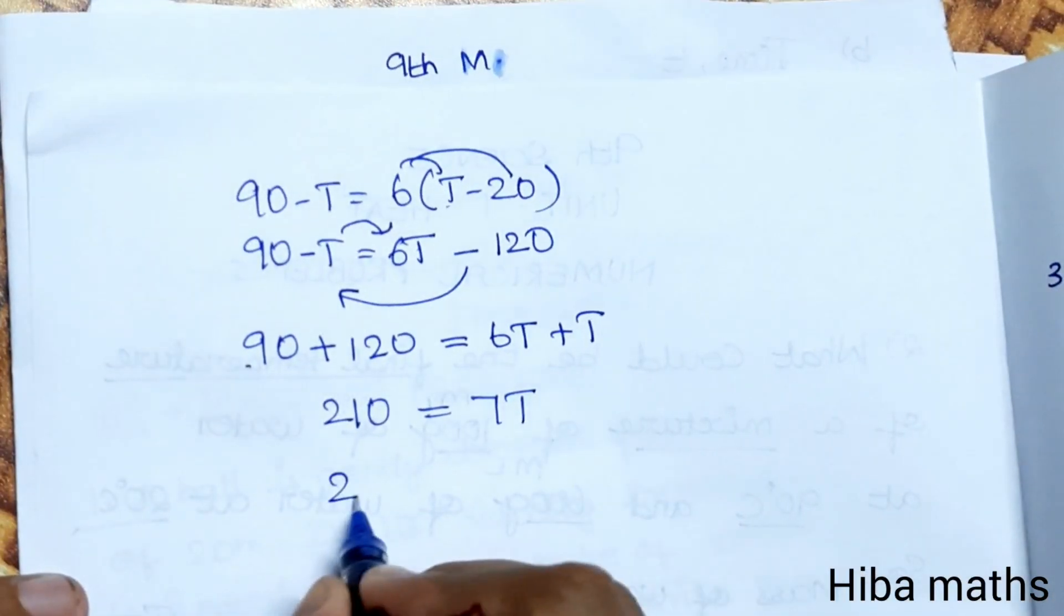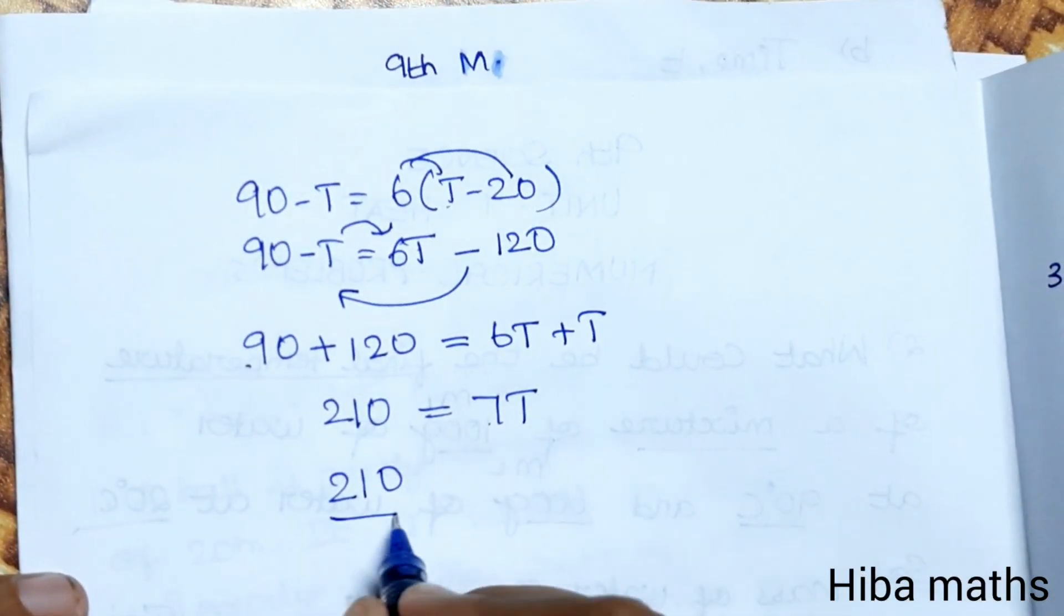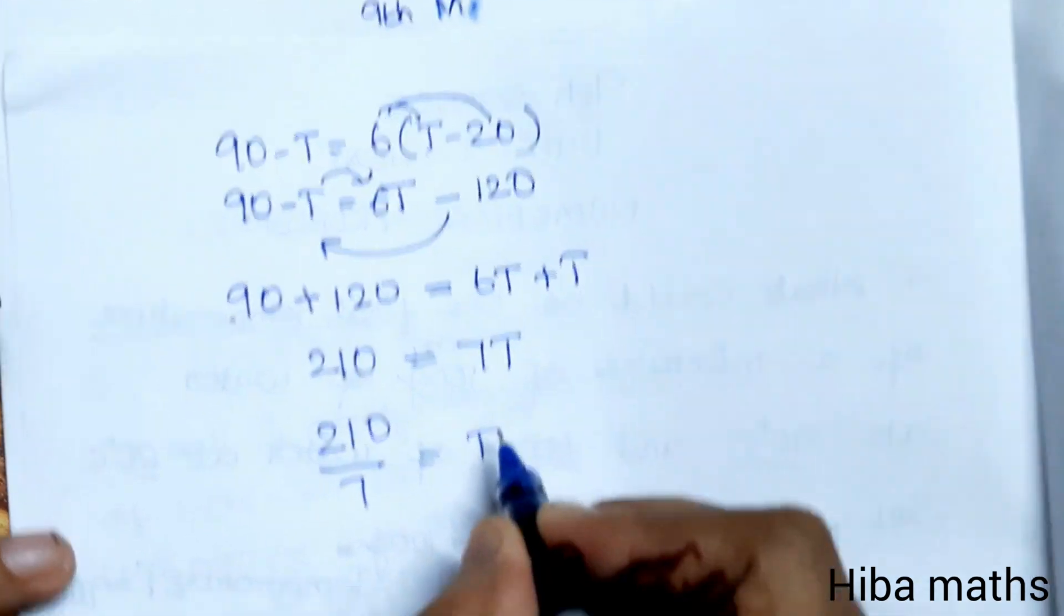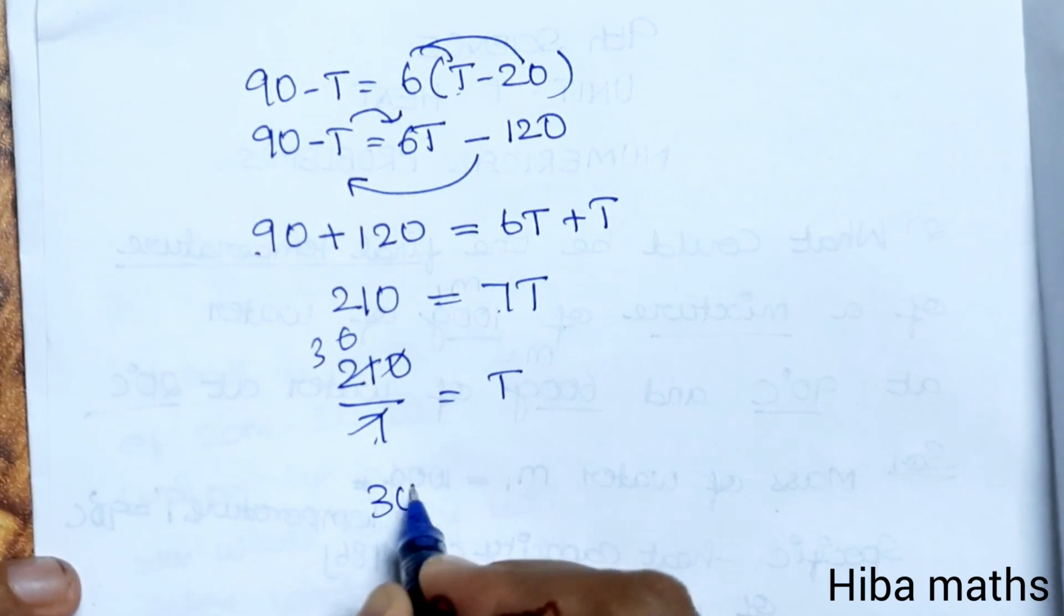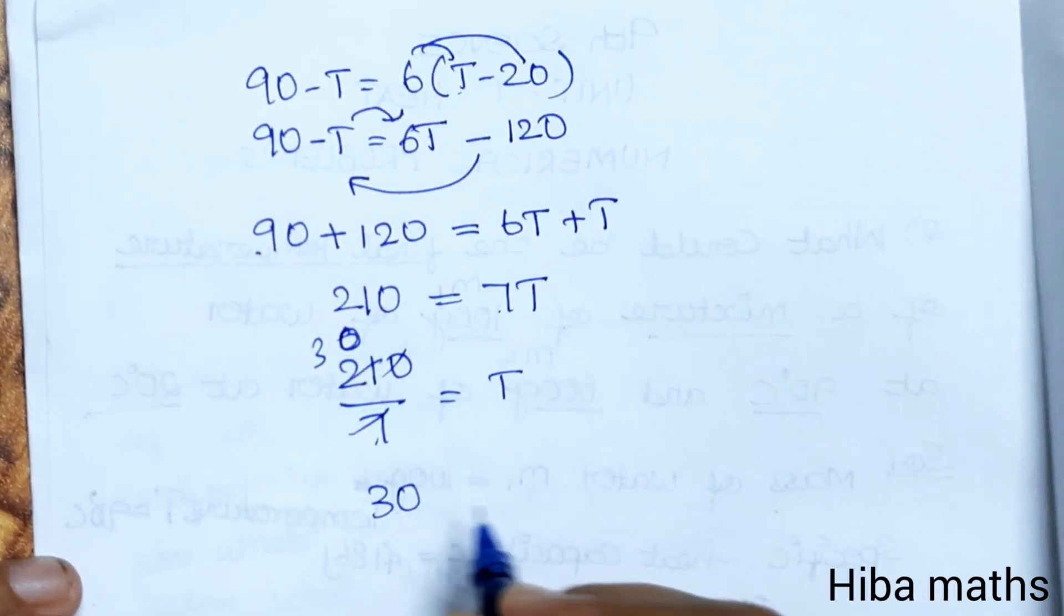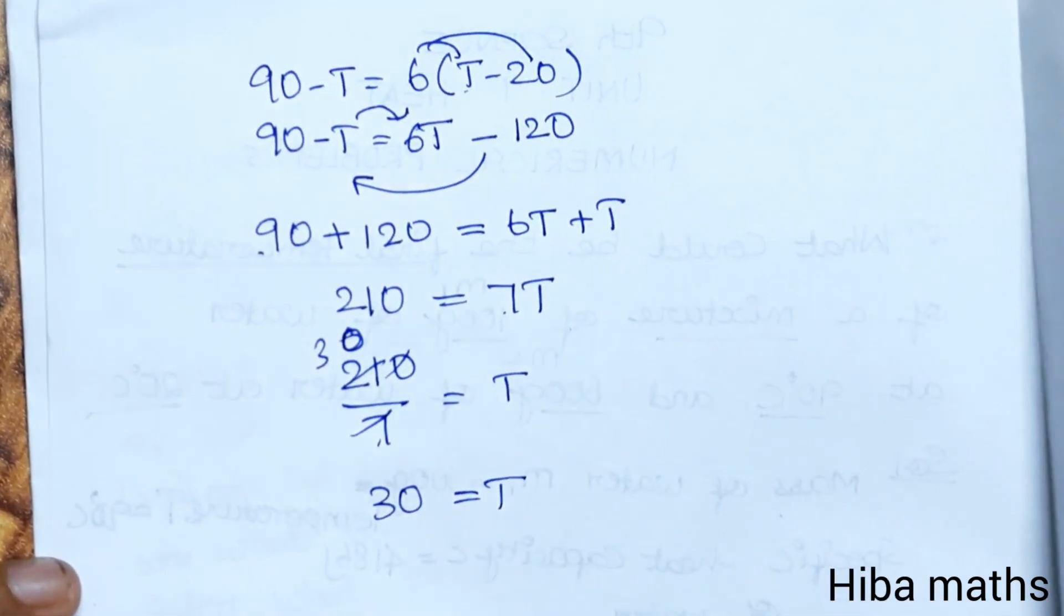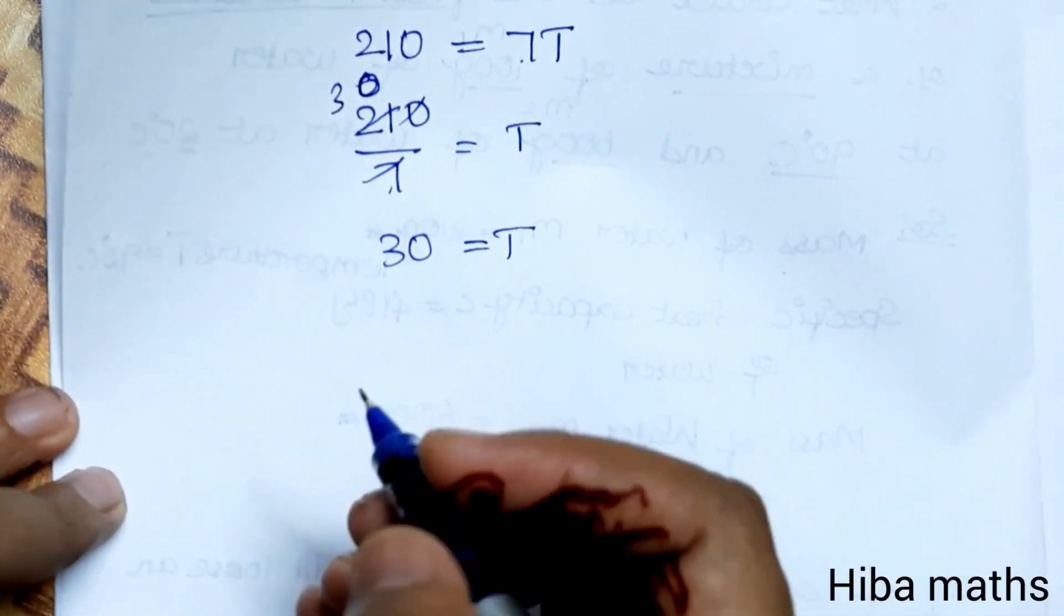210 divided by 7 equals T. 7 times 30 equals 210, so 30 equals T. Therefore, the final temperature of the mixture is 30 degrees Celsius.